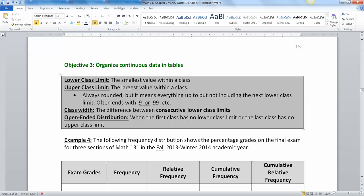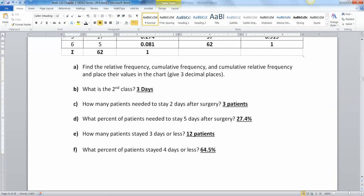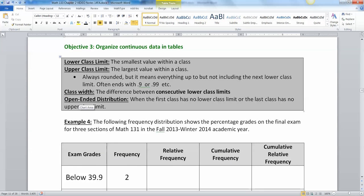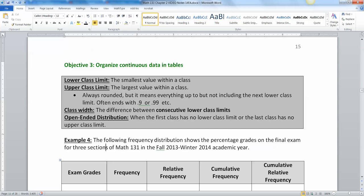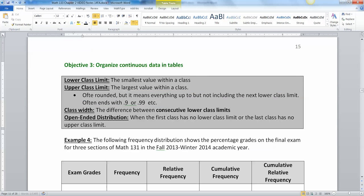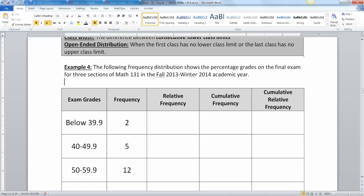All right. So here we're going to organize continuous data in a table. Continuous is going to be different because you're not going to separate it into such discrete classes. Like this one was two days, three days, four days, five days. But what if it kind of has a range? So here we have exam grades. Below 39, then 40 to 49, 50 to 59 and so on. The lower class limit is the smallest value within a class and the upper class limit is the largest value within a class. Keep in mind that we round a lot of times, but it means everything up to, but not including the next lower class limit. So it often ends with 0.9, 0.99, et cetera. Now the class width is the difference between consecutive lower class limits. And then an open ended distribution is when the first class has no lower class limit or the last class has no upper class limit.